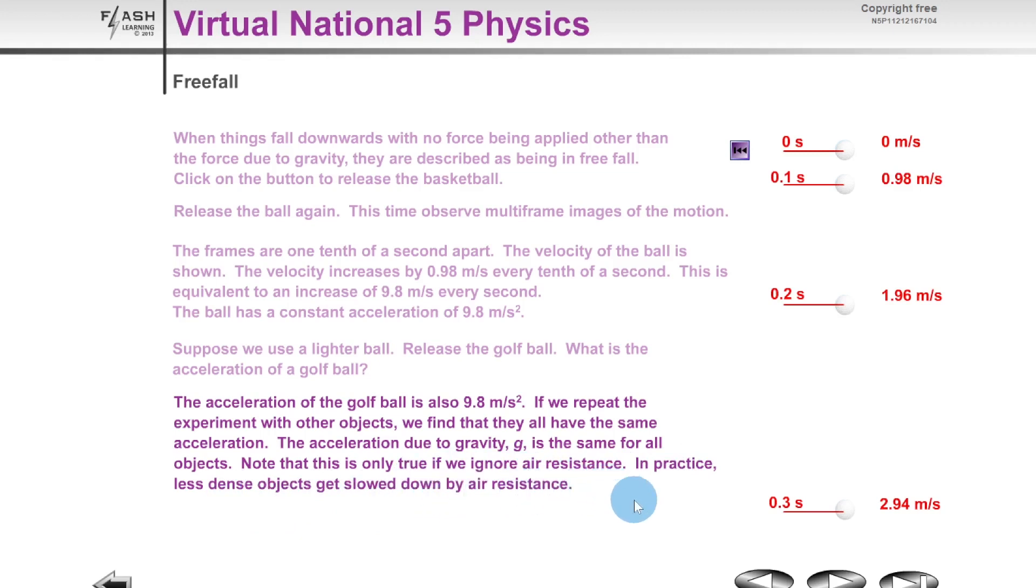Now at National 5 level you will usually be ignoring air resistance, but in practice this wouldn't actually be the case—less dense objects would get slowed down by air resistance. So we can see that it doesn't matter what size or mass the objects have, they're always going to accelerate downwards due to gravity at a rate of 9.8 meters per second squared on Earth, if we ignore air resistance.